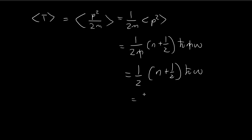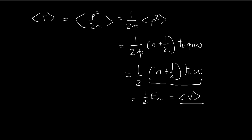Incidentally, this is equal to one-half times the total energy of the nth state. You can also check that this is equal to the expected value of the potential energy. So the expected value of kinetic energy and potential energy are going to be the same. You can find a derivation of why this equals one-half of the total energy from example 2.5.